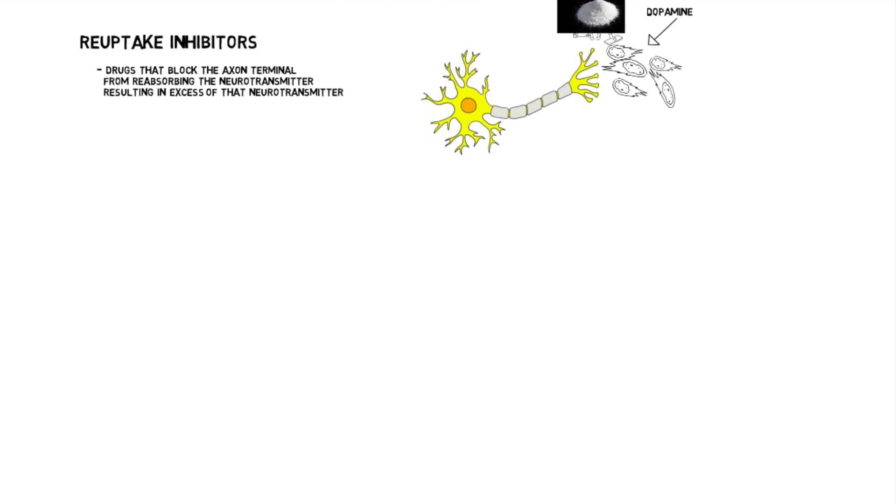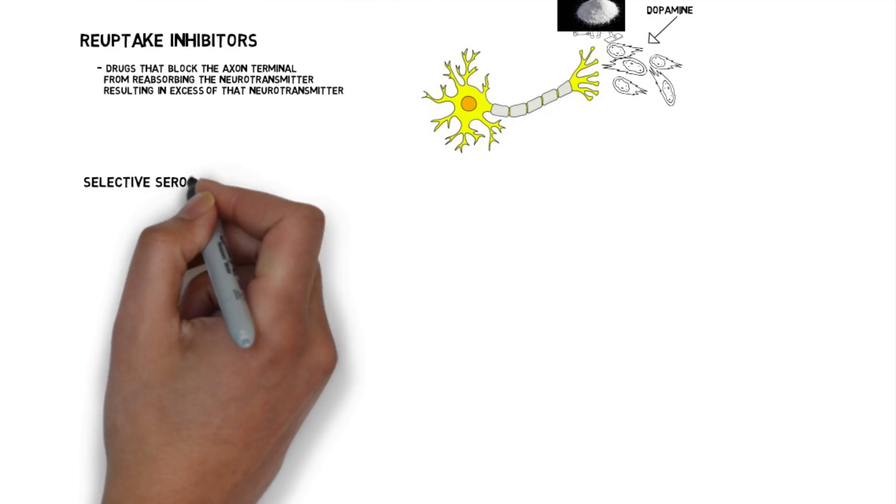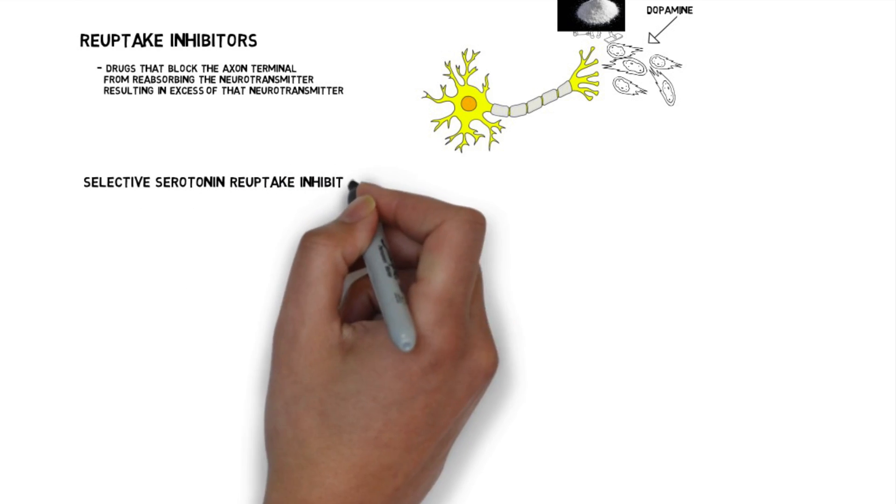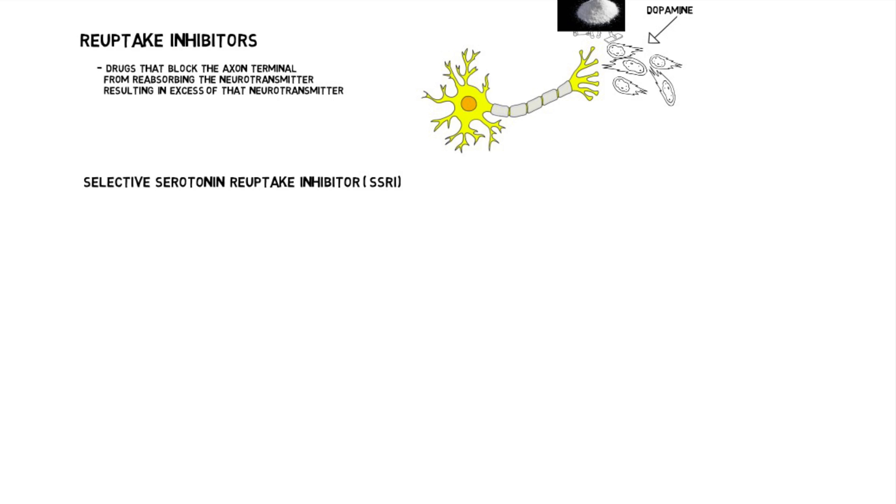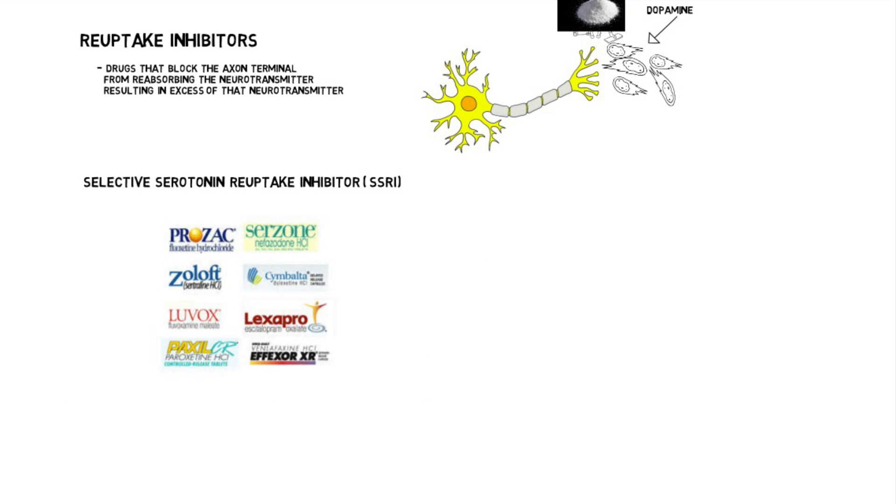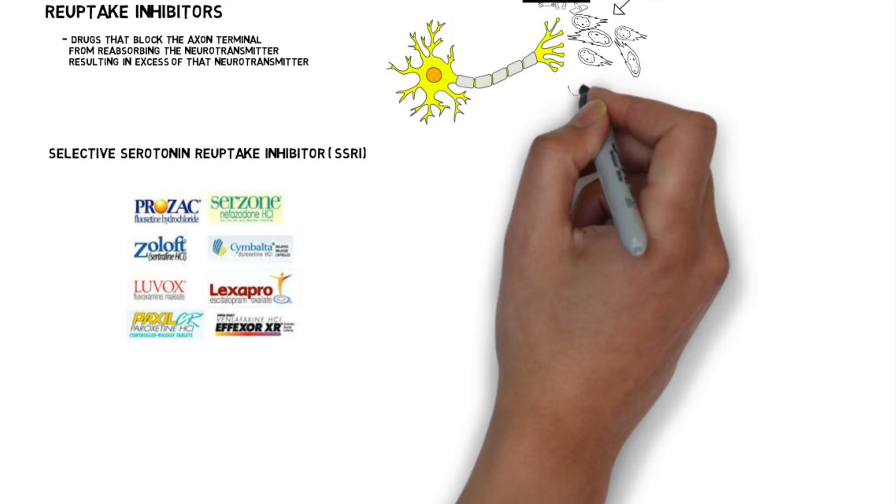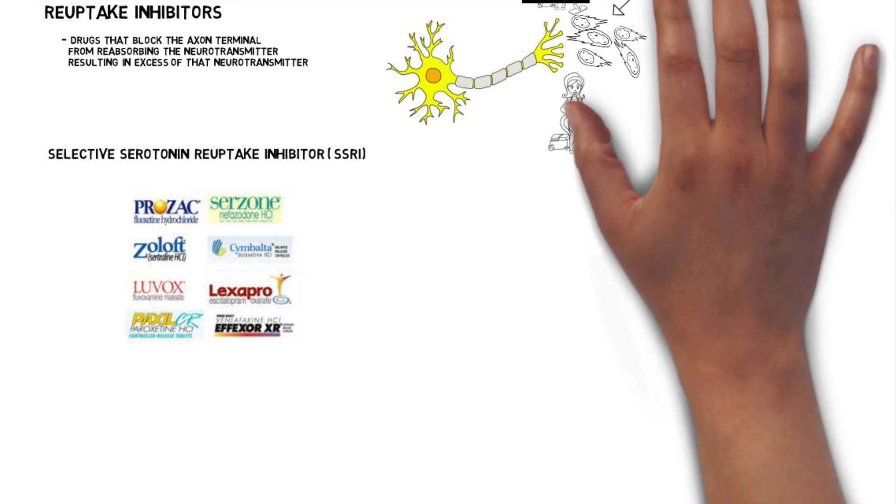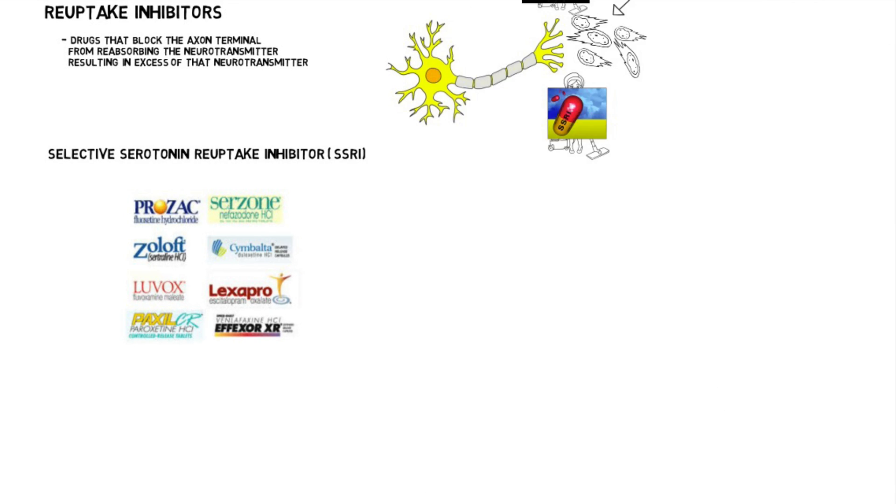In fact, almost every single antidepressant drug is a reuptake inhibitor. They're most often called SSRIs, selective serotonin reuptake inhibitors. Drugs like Paxil, Prozac, or Zoloft, they go into our body, and they stop the axon terminal from sucking up the leftover serotonin. In this case, we raise serotonin levels in our body, hopefully alleviating depression.